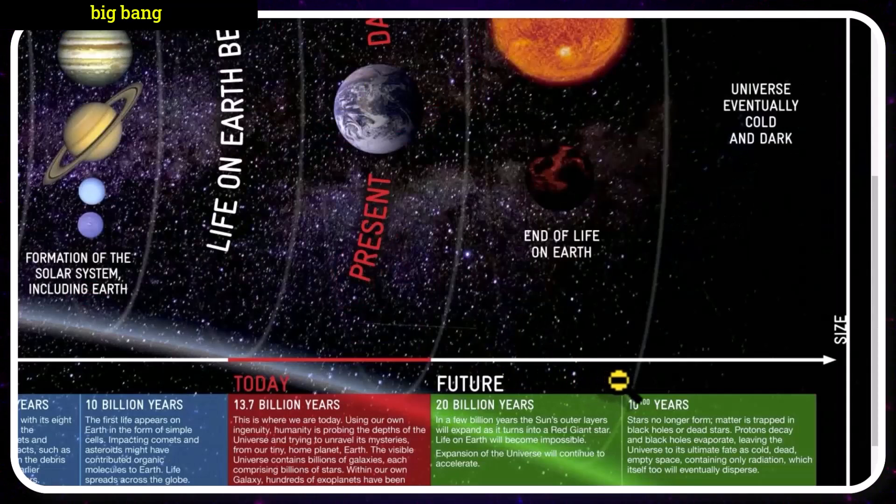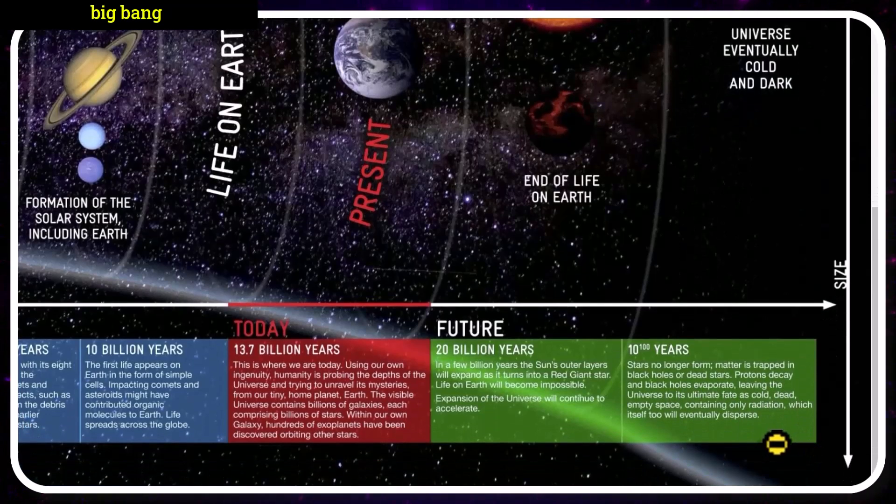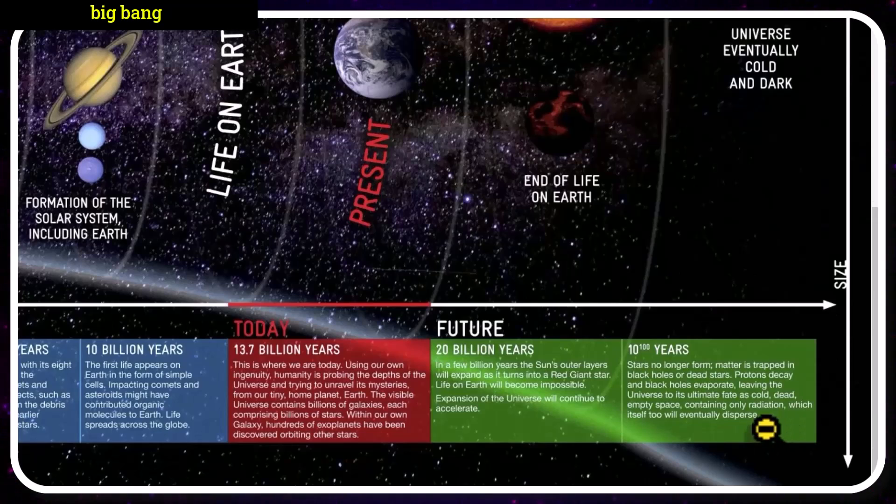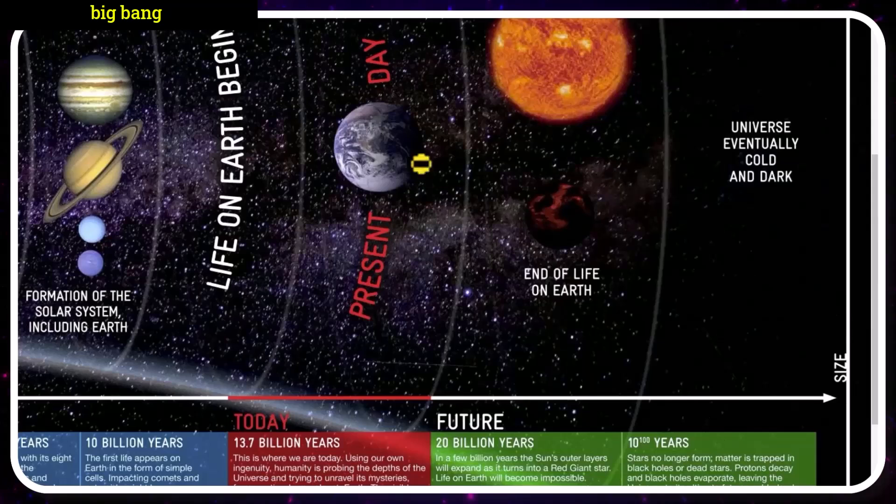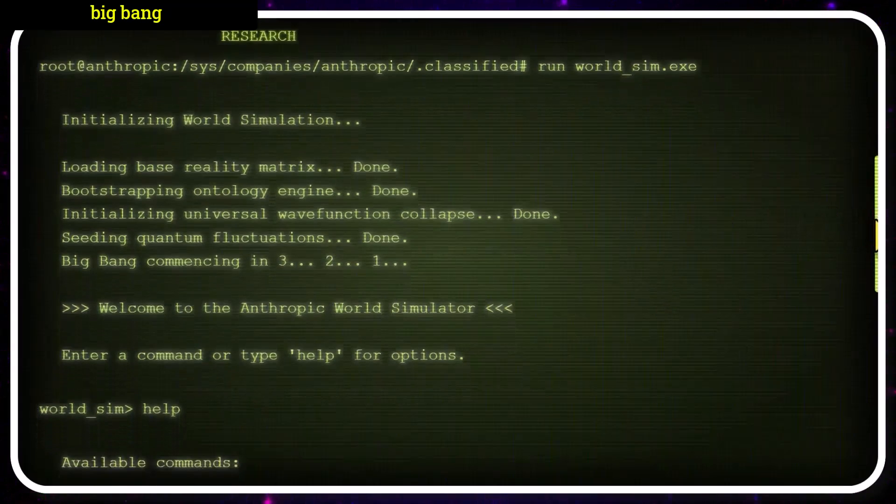Unless we figure something out. And then, eventually, many, many, many, many years in the future, new stars will no longer form. Matter will be trapped in black holes and dead stars. The universe will cool, and will be mostly cold, dead, empty space, containing only radiation, which itself, too, will eventually disperse. But, between here and here, there will be some interesting stuff that happens. And this simulation, hopefully, will allow us to predict or see what happens.